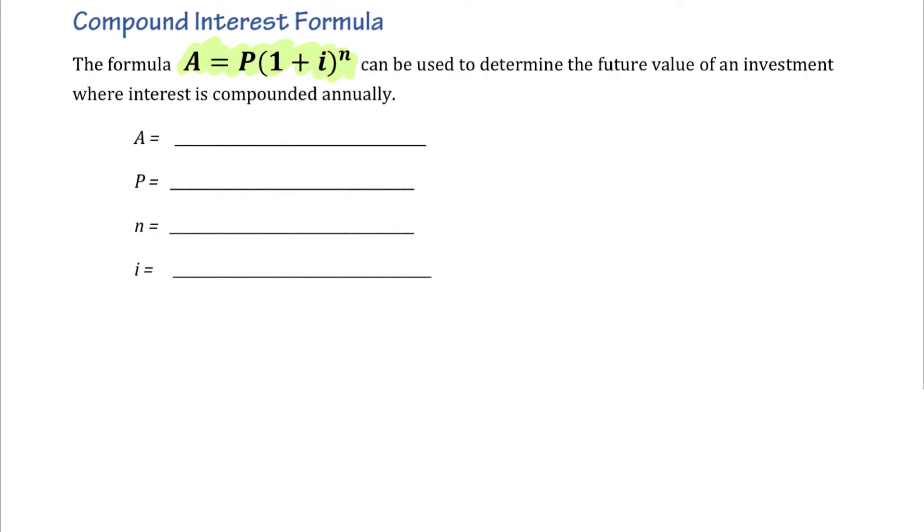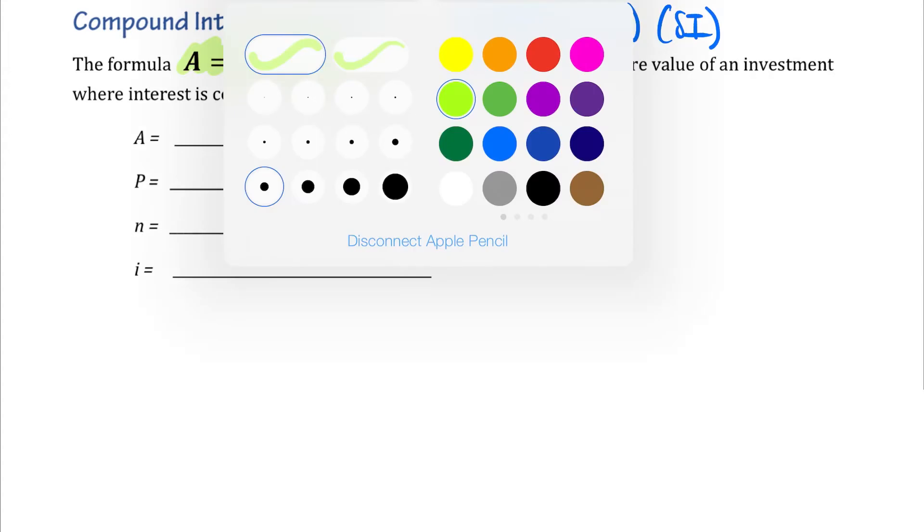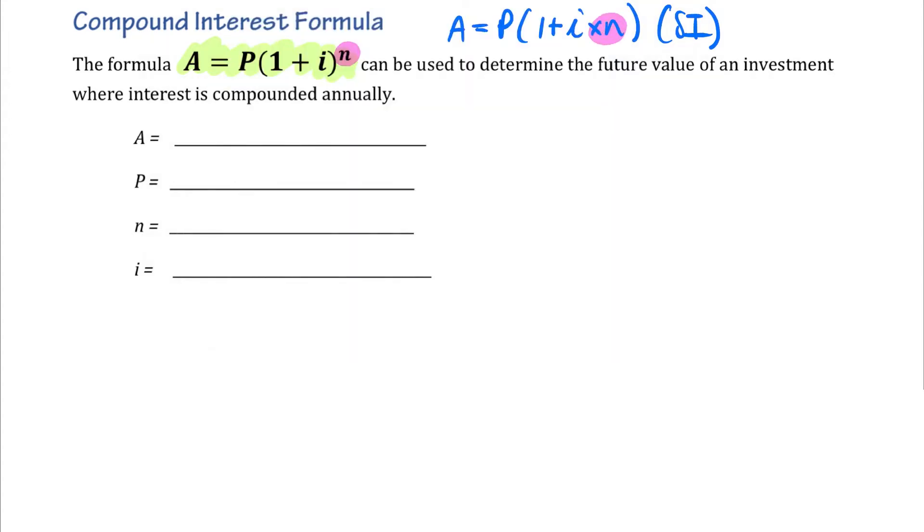Okay, let's compare it very quickly to how similar it is to our simple interest formula. We have A is equal to P times 1 plus I times N. This is our simple interest formula. What's the difference between these two? Well, it's really only with the location of N.